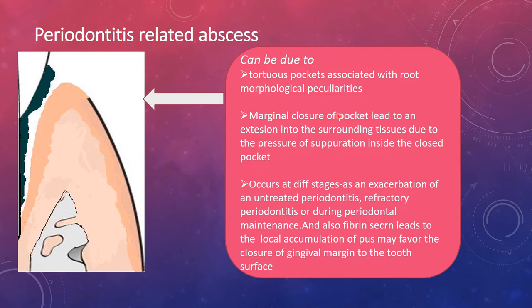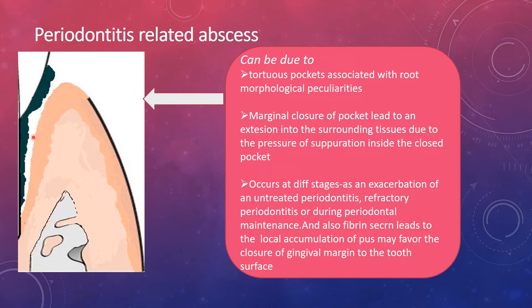Another reason is marginal closure of the pocket, which leads to extension of inflammation into the surrounding tissues due to pressure buildup inside the closed pocket. Abscesses can also occur at different stages: as an exacerbation of untreated periodontitis, refractory periodontitis, or during periodontal maintenance due to improper removal of local factors or increased inflammatory process. Additionally, fibrin secretion as part of healing can lead to localized accumulation of pus by favoring closure of the gingival margin to the tooth surface.